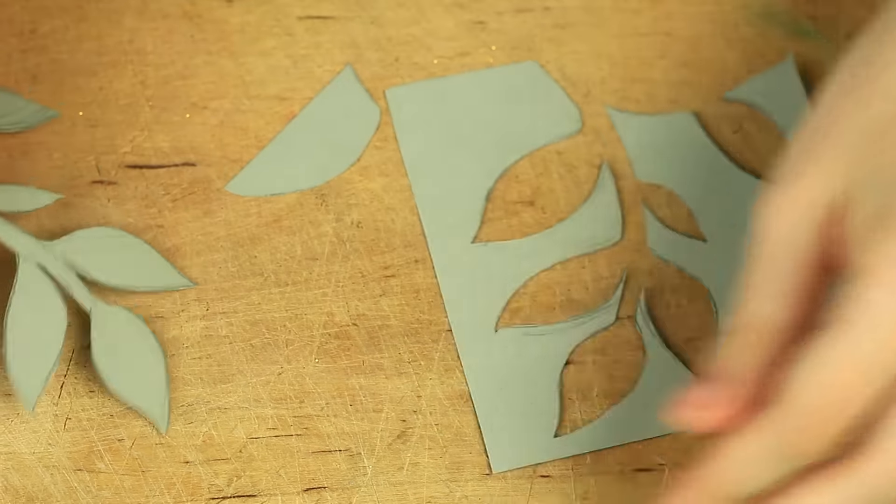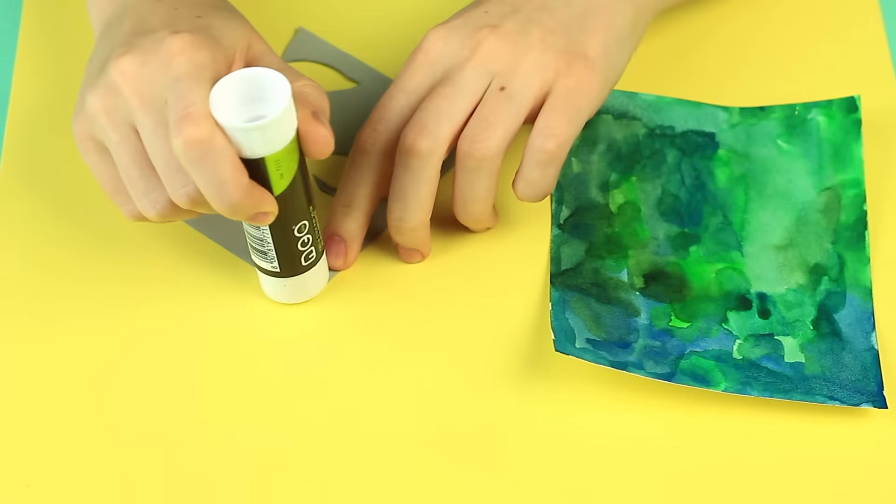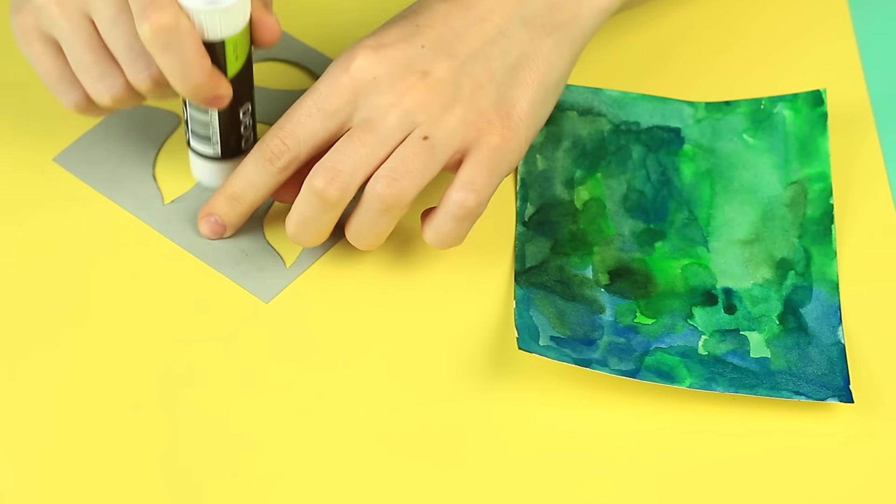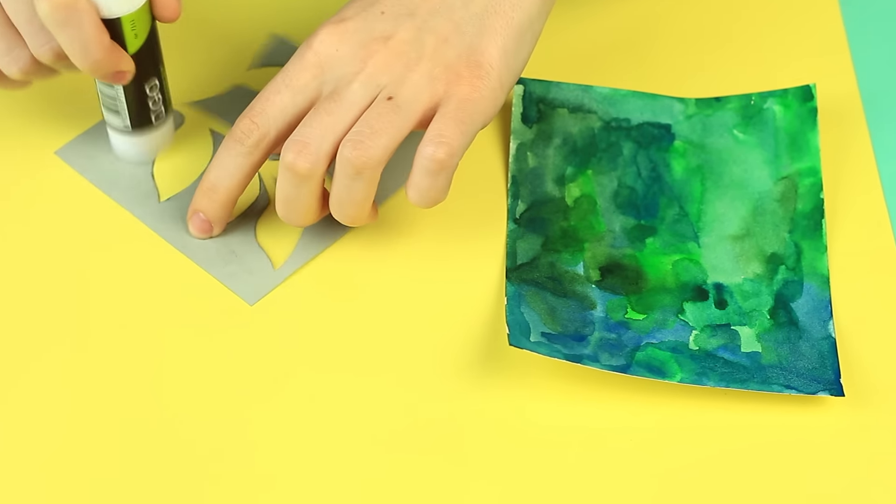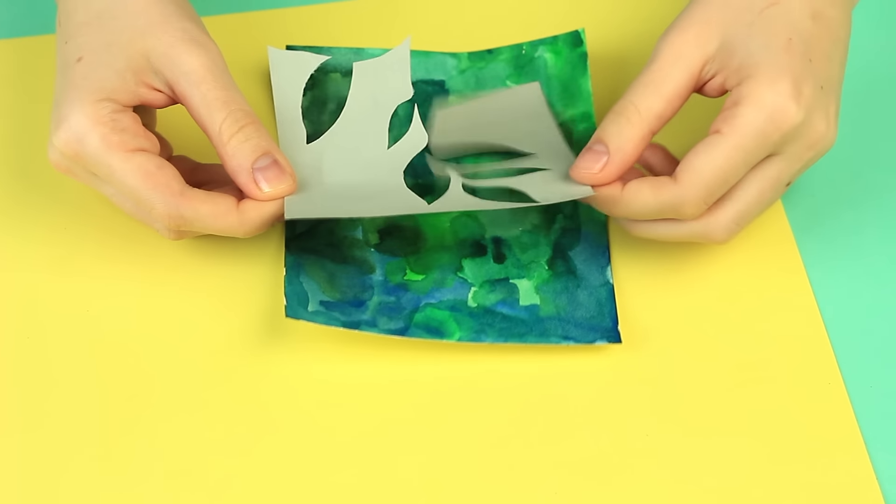Pull out the leaves. Add glue to the cardboard. We're using a glue stick, but white glue will do well. Attach to the watercolor background.